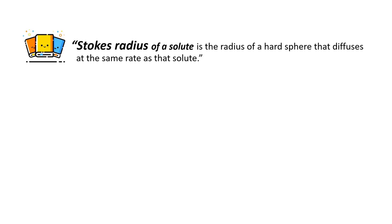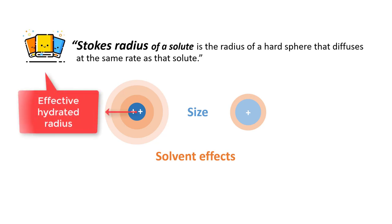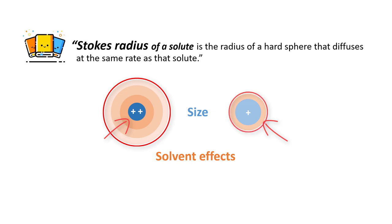The Stokes radius of a solute is the radius of a hard sphere that diffuses at the same rate as the solute. It is closely related to solute mobility, factoring in not only the size but also the solvent effects. In this experiment the solvent we will be using is ultra-pure water, so in this case the Stokes radius is closely related to the effective hydrated radius of the analyte. It is possible that a smaller ion with stronger hydration may have a greater Stokes radius than a larger ion with weaker hydration.